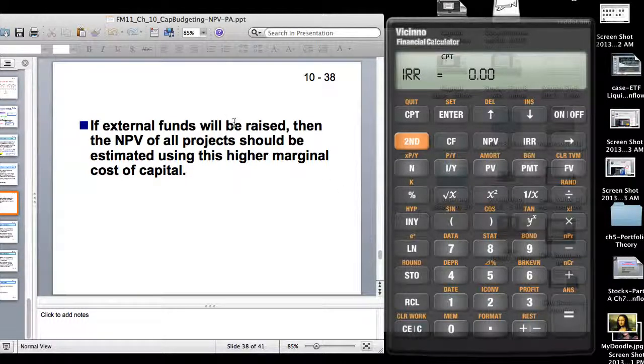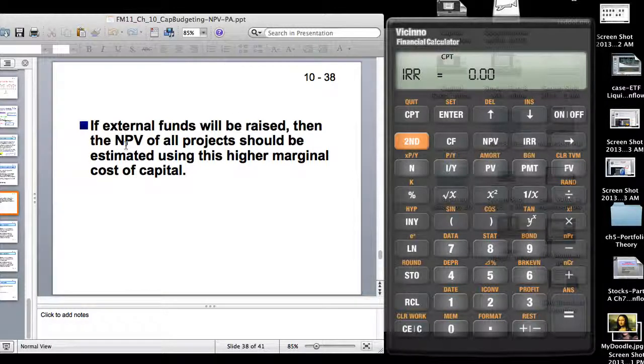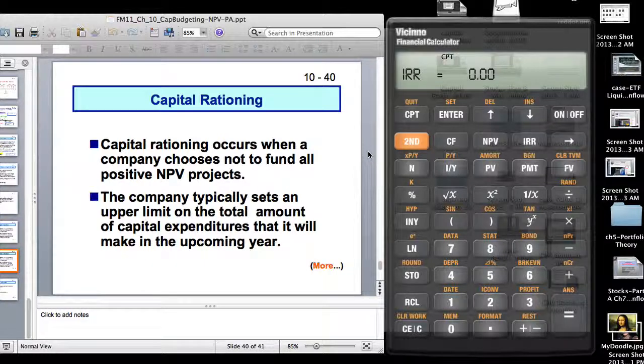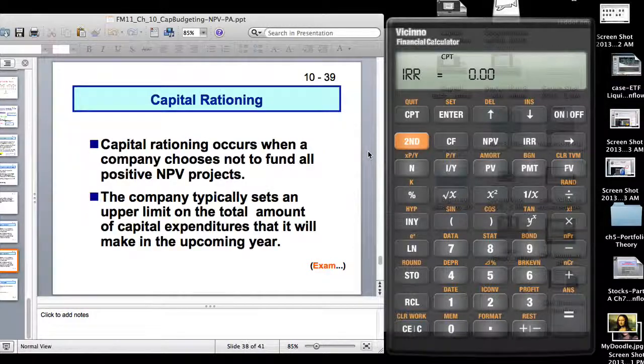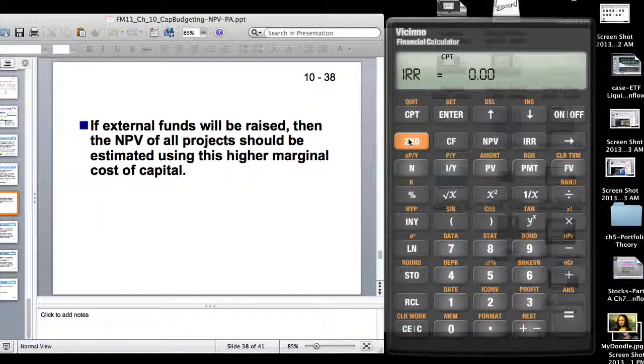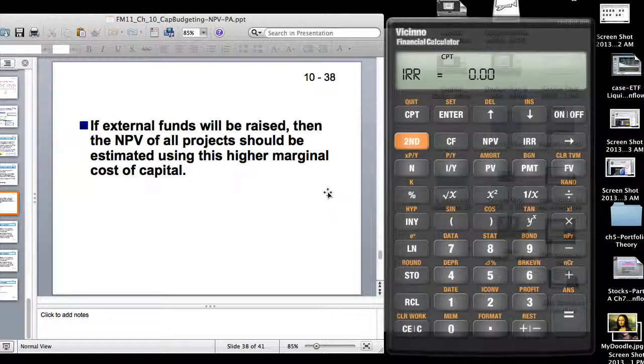Then when there aren't any funds available internally, that's when external funds are raised. And we have had some high profile IPOs in the last one year, two of them being Facebook and very recently Twitter. Then external funds are raised and then NPV calculations are done and of course the NPV should be positive using this higher marginal cost of capital. And that's pretty much it actually. That concludes this chapter on capital budgeting. Thank you.